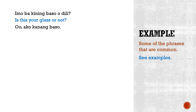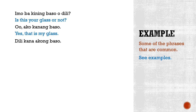You answer: Oo, ako kanang baso. Kana is a pronoun that means that. Kanang is a shortened form of kana nga. This translates to: Yes, that is my glass. Dili ka na akong baso — That is not my glass. No, that is not my glass.